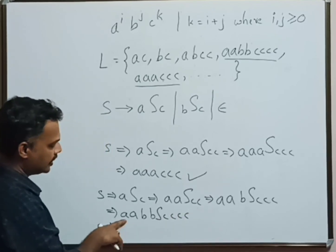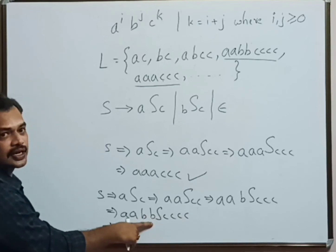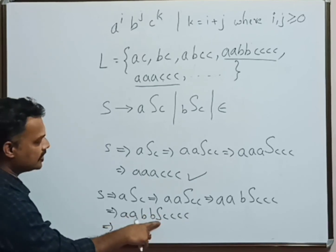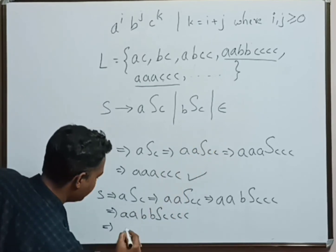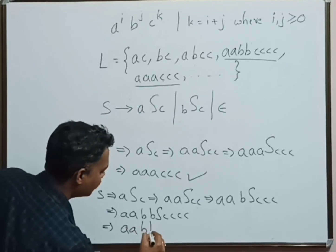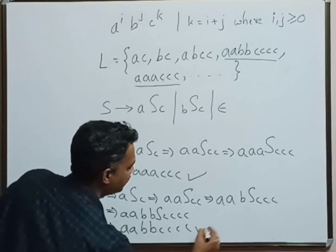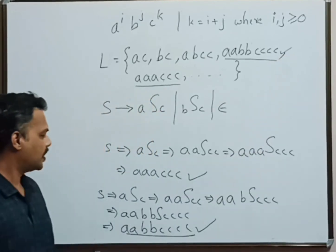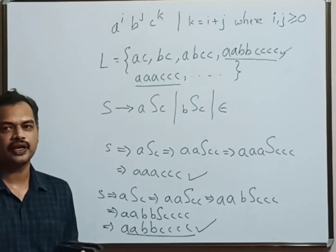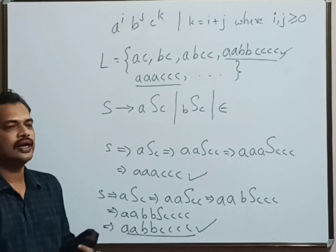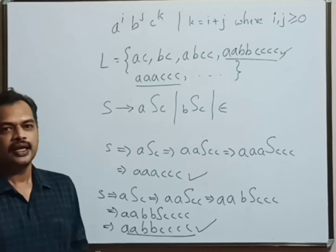Now we have to stop this recursion, that is, we have to replace S by epsilon. When I replace S by epsilon, we get the required string. So this is how we can construct CFG to address problems like this. Thank you.